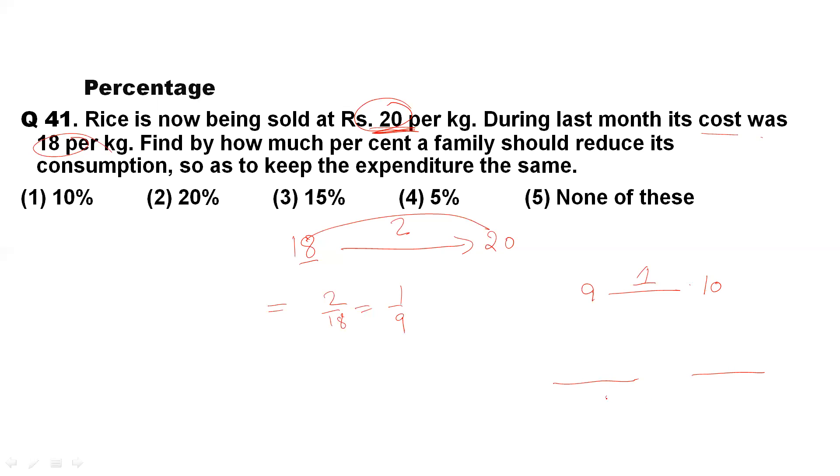Now, what do we have to do? No increment, no profit, no loss because they want expenditure to remain the same. And when expenditure is the same, we have to fill these two circles.